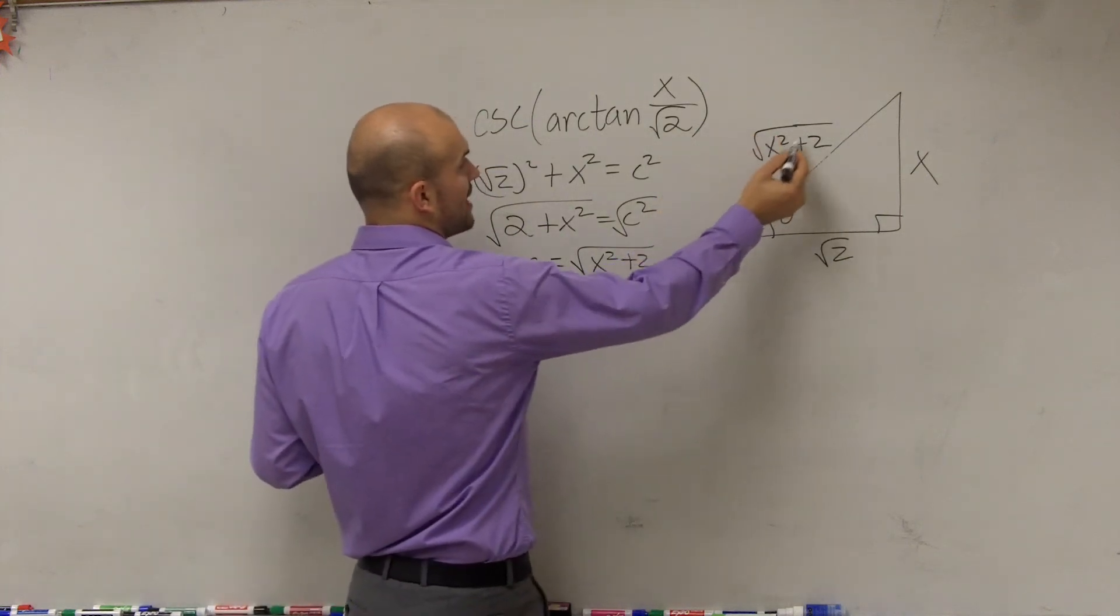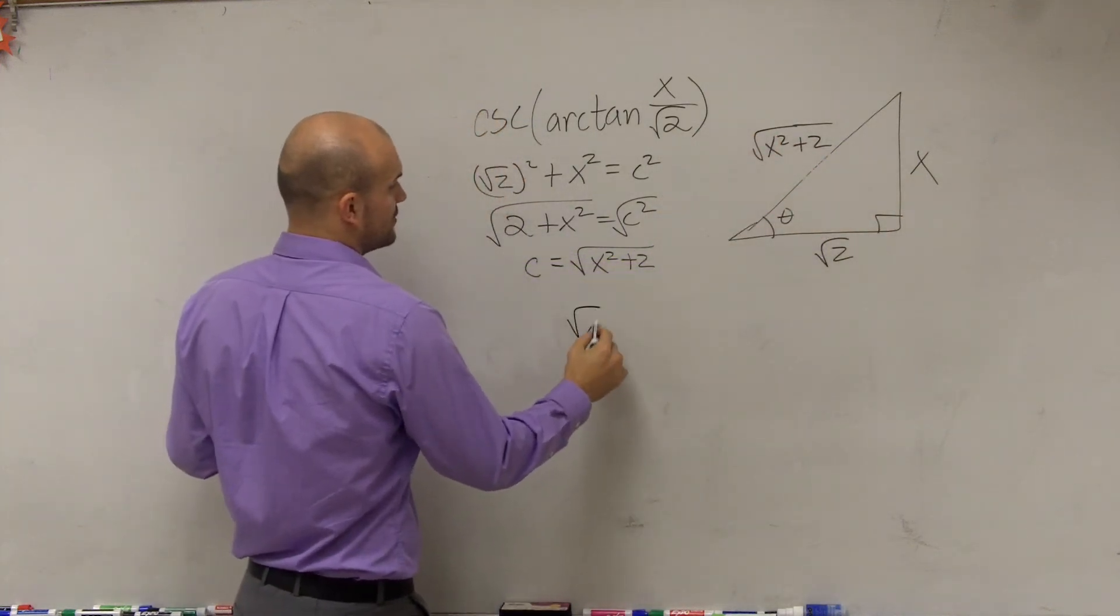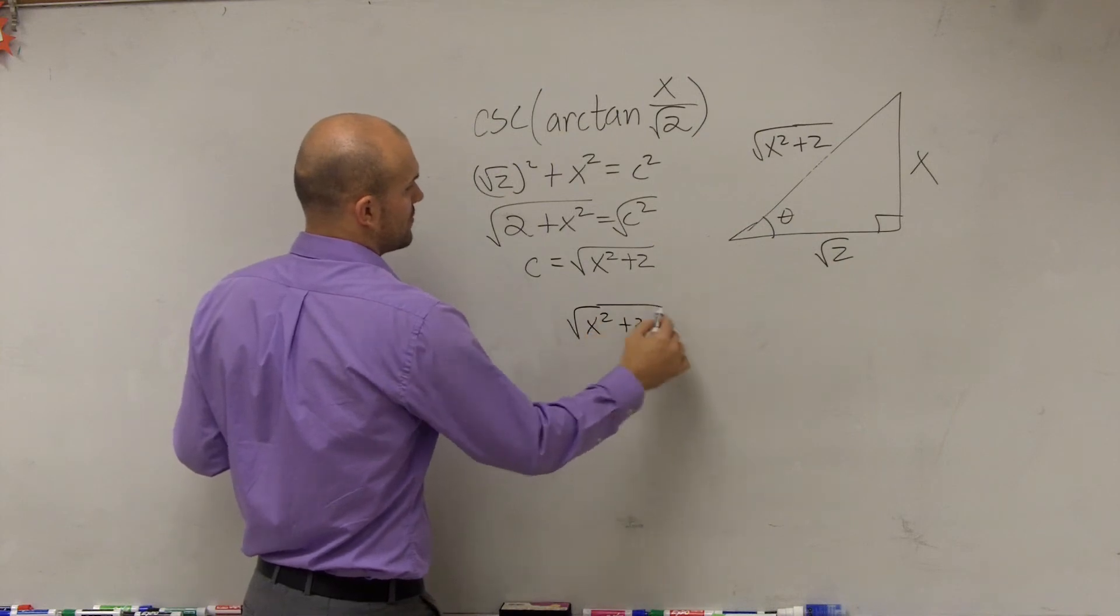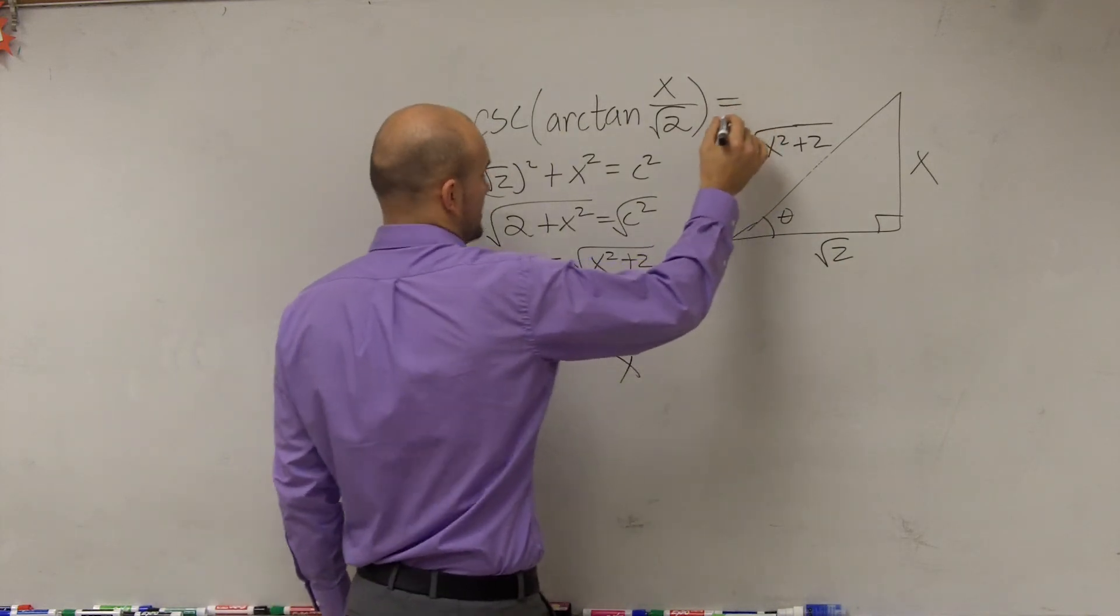So therefore, hypotenuse over opposite is going to be the square root of x squared plus 2 over x. And that's just your final answer.